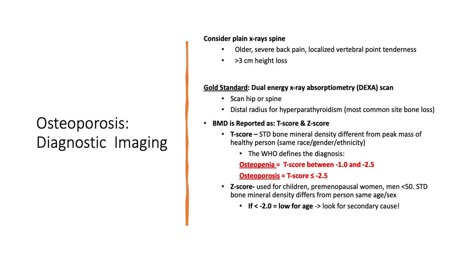In terms of diagnostic imaging, you could consider plain x-rays of the spine if an older person comes in with severe back pain, localized vertebral point tenderness, or a greater than three centimeter height loss. Our gold standard for diagnosing osteoporosis is the DEXA scan — dual energy x-ray absorptiometry — generally done at the hip or spine. In patients with hyperparathyroidism, the distal radius is the most common site for bone loss, so the wrist is used.